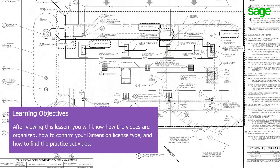After viewing this lesson, you'll understand how the videos are organized so you can quickly find the ones you need. We'll go over the types of Dimension licenses so you can decide which videos apply to you. And you'll also learn how to find the activity handouts so you can complete the practice exercises as you learn Dimension.